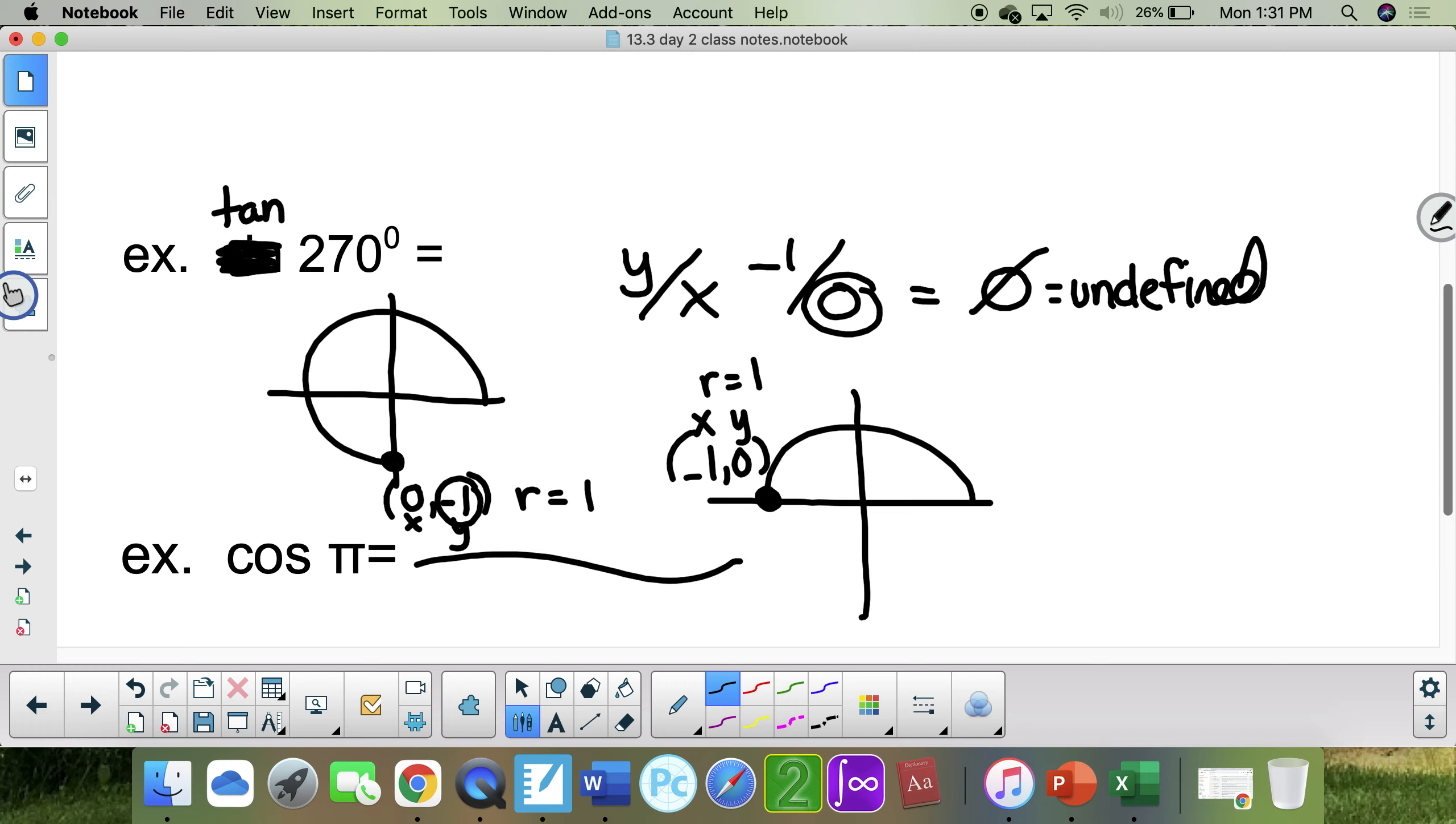Cosine is this. The adjacent side is really the x value, which is negative 1. The hypotenuse is really the r, which is 1, which gives you negative 1.